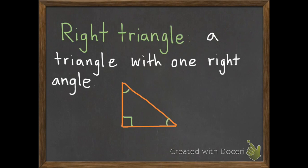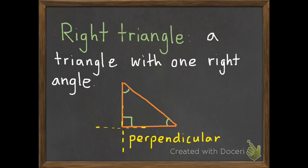It also has two other angles. Every triangle has three angles — that's why it's called a triangle, because 'tri' means three. A right triangle also has two sides that make perpendicular lines. As you'll remember from earlier in the chapter, perpendicular lines are two lines that cross to make a right angle, which we have right here at the bottom corner of this triangle. So we have perpendicular sides, one right angle, and two acute angles. That is a right triangle.